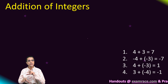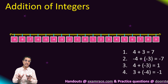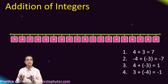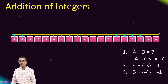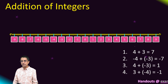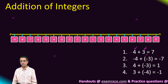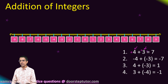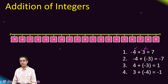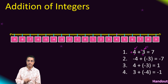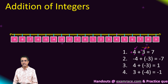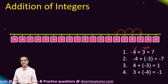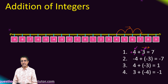Now we will solve the same additions using the number line, which is our preferred method for exams. Case one: adding two positive numbers, plus four and plus three. We start at four on the number line. Since the second operand is positive, we move towards the right by three, and we arrive at seven.